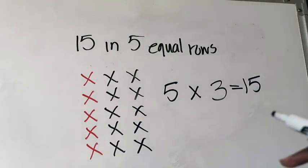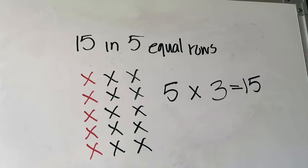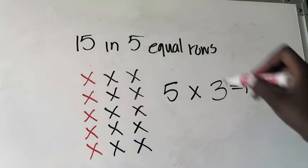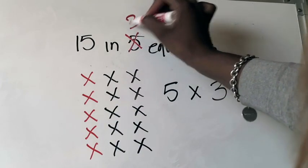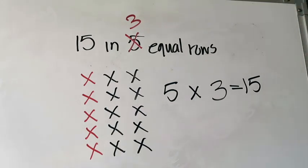Now let's say you were asked to make another array, but this time instead of using five times three, you were asked to create an array representing three times five — in other words, to have 15 pieces arranged in three equal rows instead of five. We're going to see what that array looks like and confirm that even though we switched the order of the factors, our product is not going to change.